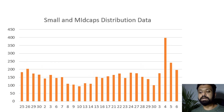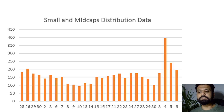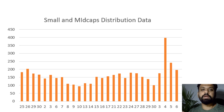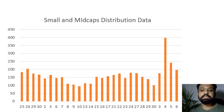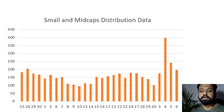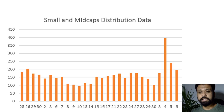Coming to the small and mid cap distribution data — it has started to cool off. A cooling of distribution data tells us that not many stocks are being distributed and accumulation remains at the same level. There is one more thing: the sheet I share only with students, which filters fundamentally decent small and mid caps, is actually showing an improvement in accumulation. This tells us that money is moving into names where fundamentals are also good.